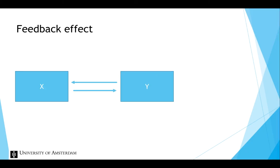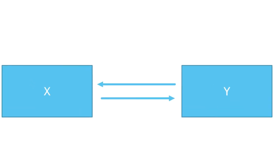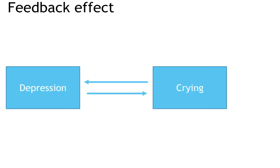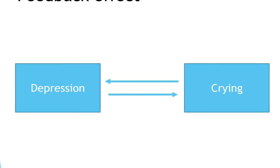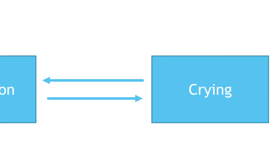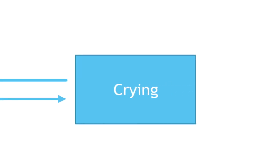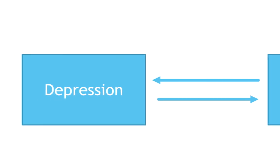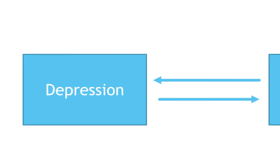The fourth type of causal relationship is a feedback effect. In this example, x has a direct effect on y, and y has a direct effect on x. This type of effect can be recognized by a double arrow, and is also referred to as a reciprocal effect. As an example, depression has a positive effect on crying — if you feel more depressed, you cry more. But crying also has a positive effect on depression — if you cry more, you will feel more depressed.